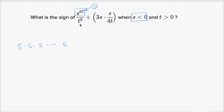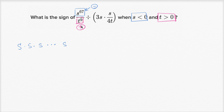Now what's t to the ninth? Well t is a positive number — they tell us t is greater than zero. A positive number to any power, however many you have multiplied together, is going to be positive. So t to the ninth is positive. A negative divided by a positive is going to be negative. So this whole expression — s to the 67th over t to the ninth — is going to be negative.